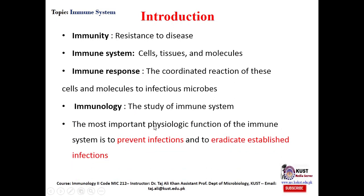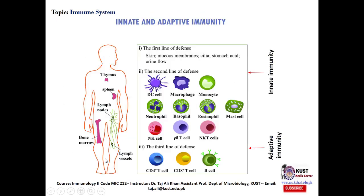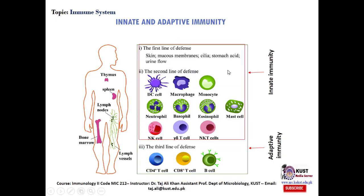The immune system performs two basic functions: to prevent infection and to eradicate infection. The immune system consists of innate and adaptive immunity. Innate immunity consists of the first line of defense, which includes the skin.